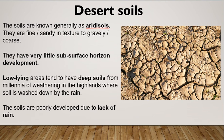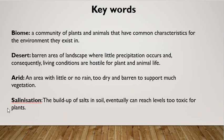Moving on to desert soil. Soils in the desert are generally known as aridisols — that's the word we came across at the very start. We know arid means an area with little or no rain, too dry and barren to support vegetation. So aridisols are basically soils in an area with little or no rain that are too dry and barren to support vegetation.